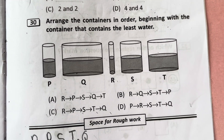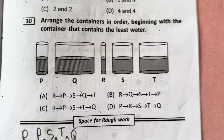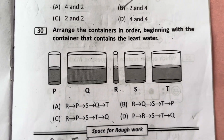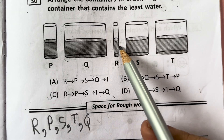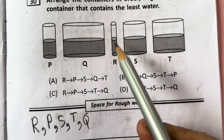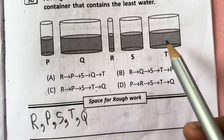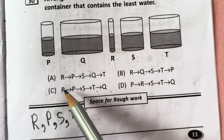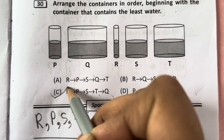Arrange the containers in order beginning with the container that contains the least water. R contains the least water, so the order is R, P, S, T, Q. Answer is C.